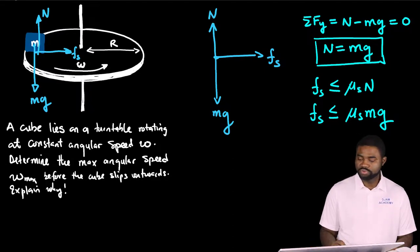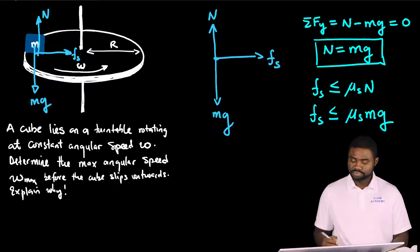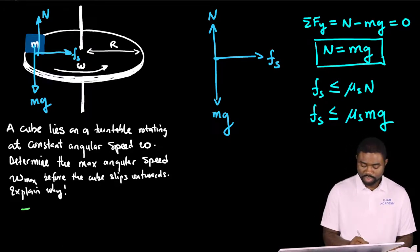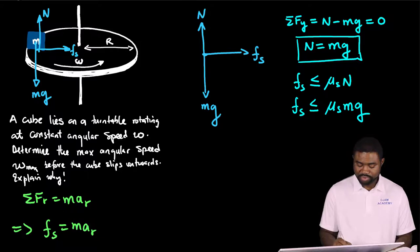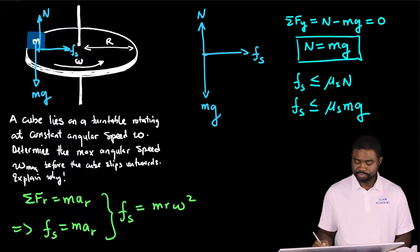let us sum the forces in the direction of the centripetal acceleration. We know that the summation of f r is equal to m a r, which would mean that f sub s is equal to m a r, which equals m r omega squared.